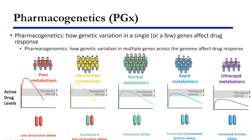Rapid metabolizers may have an increased activity allele, metabolizing the drug faster than normal, so drug levels may still be therapeutic but a little lower. Ultra-rapid metabolizers with two increased activity alleles metabolize so fast they may never reach the therapeutic interval, so the drug is not likely to work for those patients. The situation essentially flips for a prodrug — one that requires metabolism to become active — where ultra-rapid metabolizers could have very high active drug levels, and poor metabolizers would never convert the prodrug and get no efficacy.